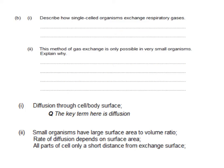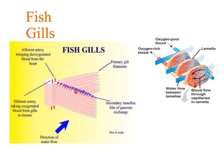Fish gills are amazingly adapted for gas exchange. The concentration of oxygen in water is far less than in air, so the fish has to be able to get enough oxygen into its blood. Thinking about Fick's Law and surface area: there are loads of gill filaments, and on each gill filament you've got many lamellae. It's on the lamellae itself that the capillaries are found, so high surface area is provided by many filaments and lamellae.